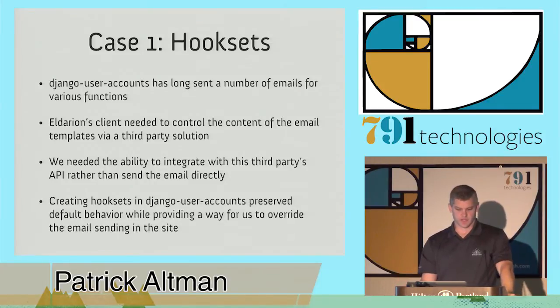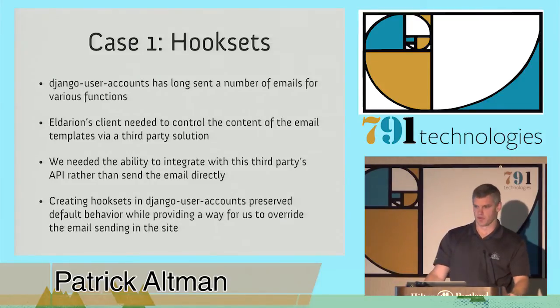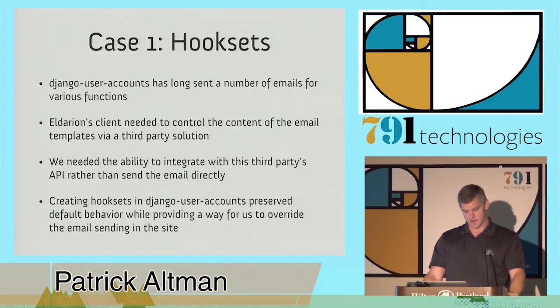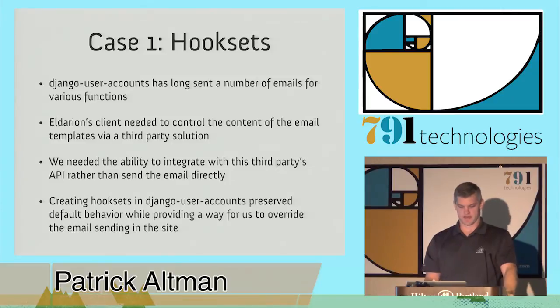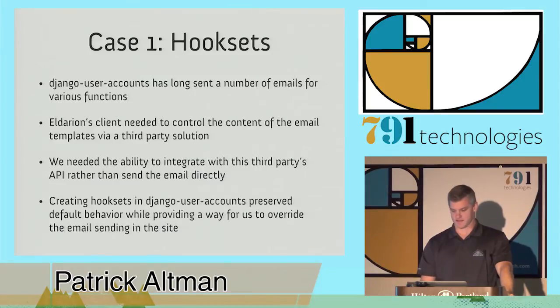The client, in this case, wanted to control the content of the email through a third-party service that he had subscribed to. And it would require us to make API calls providing the context for those emails. So the solution was to create hook set methods to override how the emails are being sent, so we could implement this in his site.